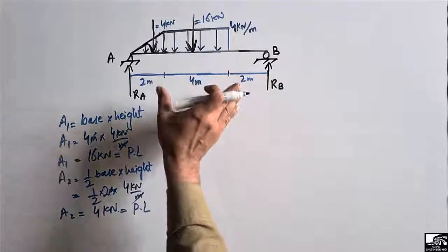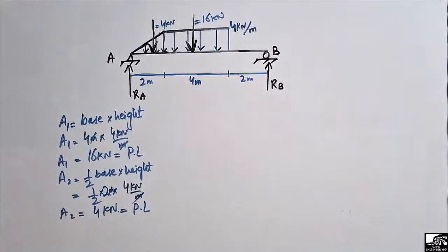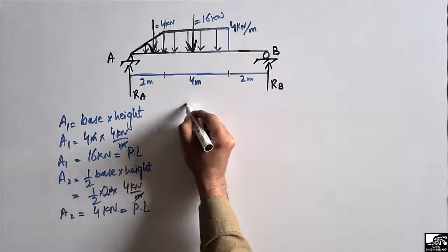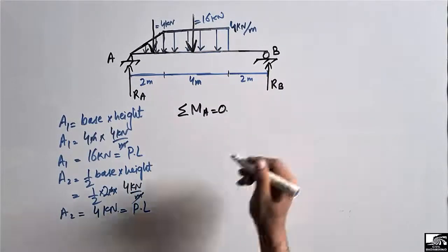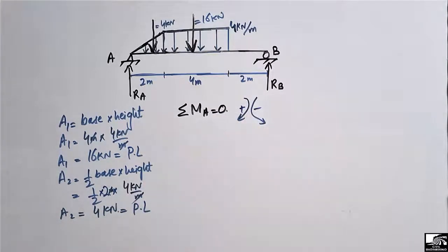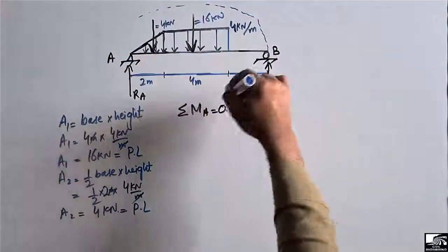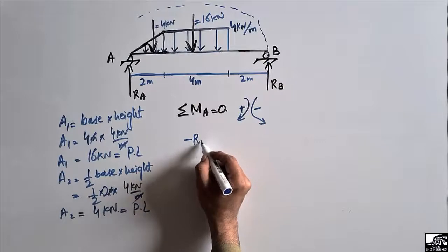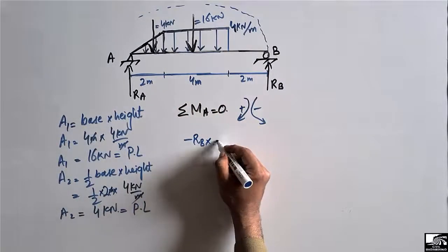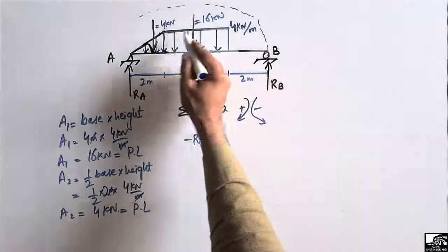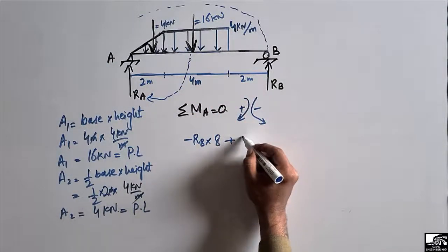Now we take the summation of moments at point A equal to zero. Clockwise moments are positive and anticlockwise moments are negative. RB acts anticlockwise about A, so it is minus RB times 8 meters. The rectangular load creates a clockwise moment, so it is plus 16 kilonewtons times its moment arm.